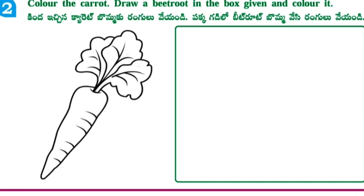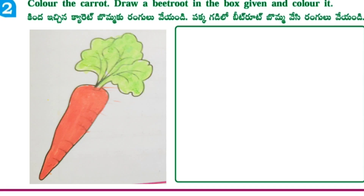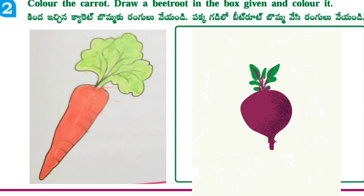Next one, color the carrot. Draw a beetroot in the box given and color it. Here you have to color the carrot first, and then you have to draw a beetroot and color it.